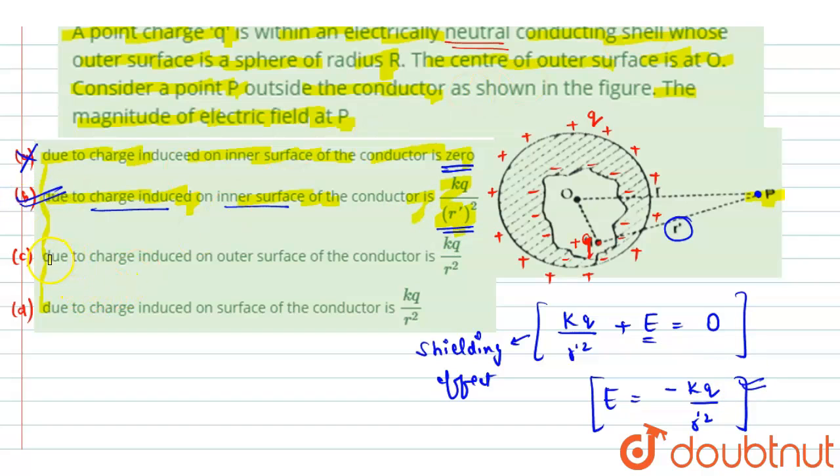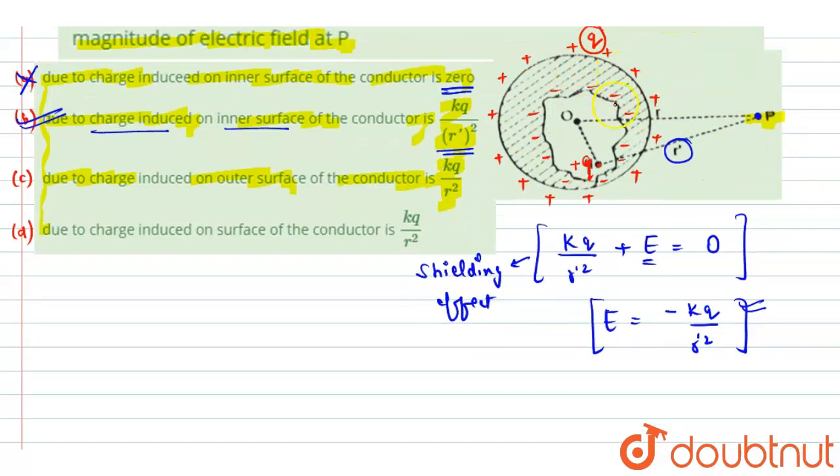In option C we have, due to charge induced on outer surface of the conductor is KQ by R square. Now see, we have a positive Q charge that is induced on the outer surface of the shell. Now it will be acting as a simple shell on which this Q charge is distributed uniformly. So we know that due to a shell, electric field at any point P will be given as KQ divided by the distance from the center that is R square. So electric field due to this positive induced charge on the outer surface is equals to KQ by R square. Hence option C is also correct.